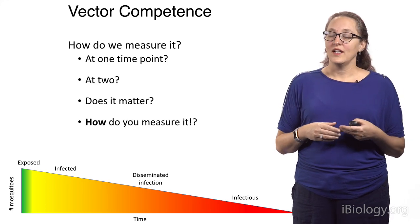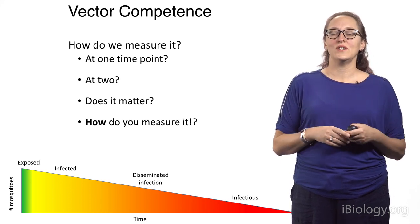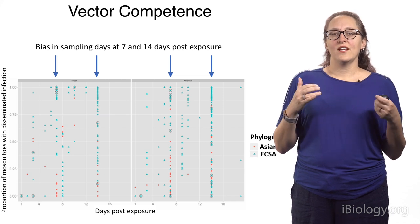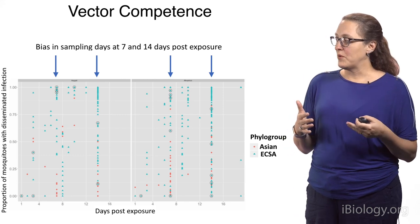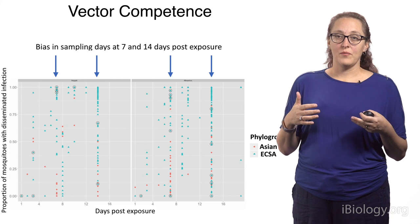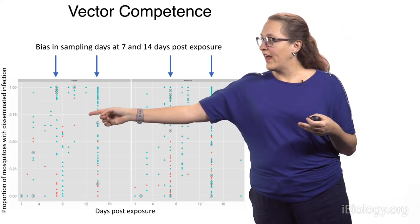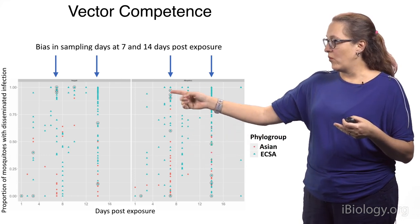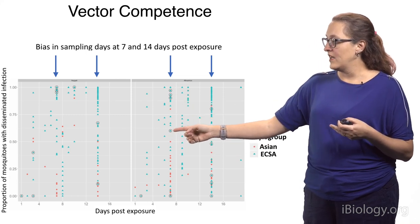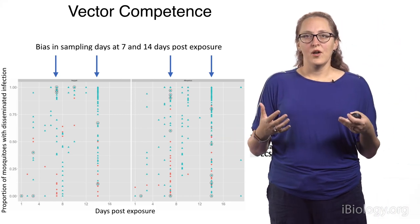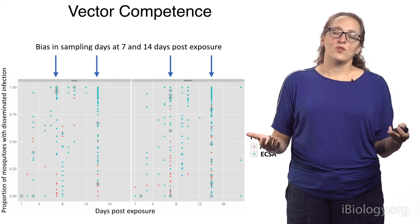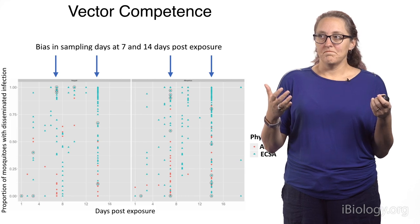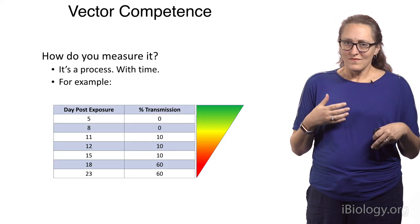How do we measure it — at one time point, at two time points? Does it really matter? One thing I noticed when starting my vector competence journey was a bias in sampling at 7 and 14 days post-exposure. Looking at chikungunya vector competence in the literature, there's a strong propensity to measure at 7 and 14 days. Why? One week and two weeks is easy to talk about — it's really a historical artifact. There is no biological basis for 7 and 14 days.